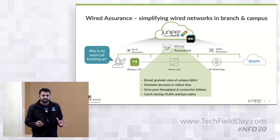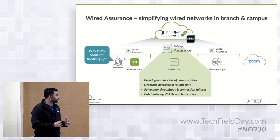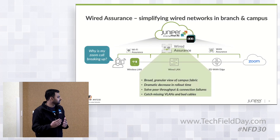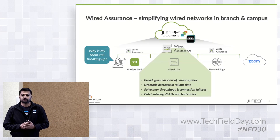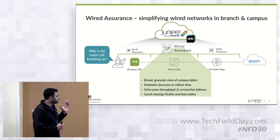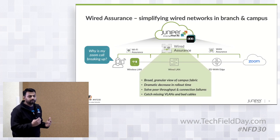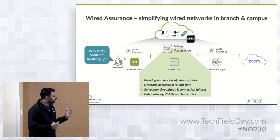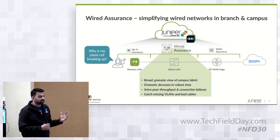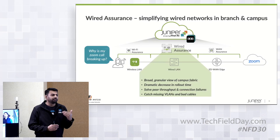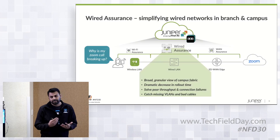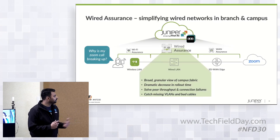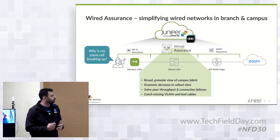Our focus currently, from a Mist standpoint, is encompassing every piece of the network — every network equipment, all the way from wireless, wired, and WAN — and ultimately give you answers on what the experience is like. Christian spoke about your Zoom call breaking up. Where could be the problem? We have telemetry coming in from Wi-Fi, from wired, as well as the WAN portfolio. Our focus is on how do we get the most out of this telemetry, make the most sense out of it, and answer tough questions as to why there was a problem with your application and where that problem is.